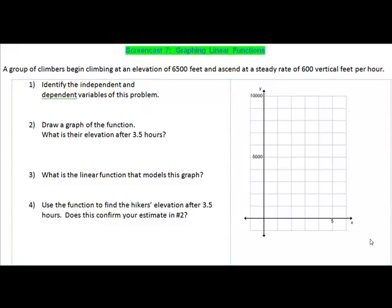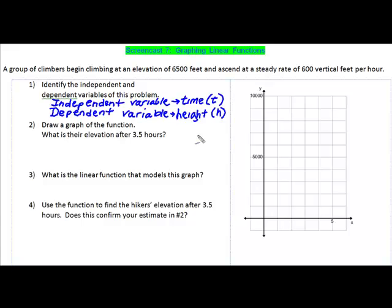We will go ahead and label those now. For our purposes, we will call time t. That's our independent variable. Our dependent variable is our height. And again, for our purposes, we will label that h.